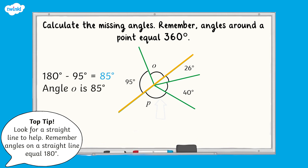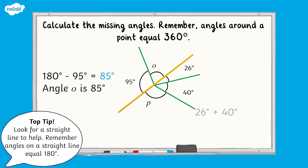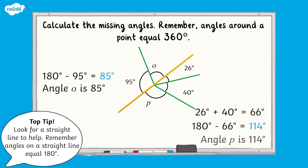Angle P is a little bit trickier. We need to add together the two known angles on this side of the straight line first. So 26 degrees add 40 degrees is equal to 66 degrees. We then need to subtract this from 180 degrees. 180 degrees subtract 66 degrees is 114 degrees. Therefore angle P is 114 degrees.